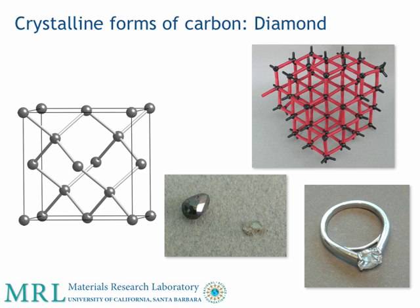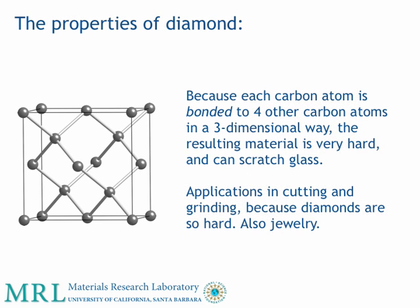Let us now look at the crystalline forms of carbon. The first one we look at is diamond. We know of diamond as a brilliant jewel and also as the hardest known naturally occurring mineral. In this computer model, the black spheres are carbon atoms. The reason that diamond is so hard is because every carbon in diamond is bonded to four other carbon atoms in a three-dimensional way. No other naturally occurring material can scratch a diamond. Diamonds are not only used in jewelry but also in cutting and grinding because they are so hard.